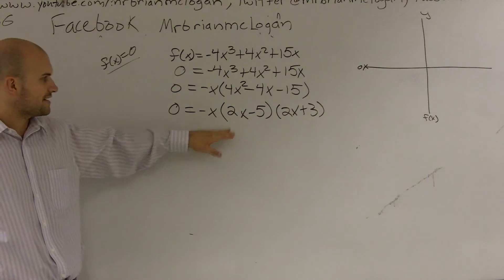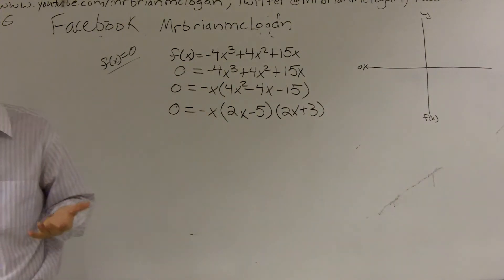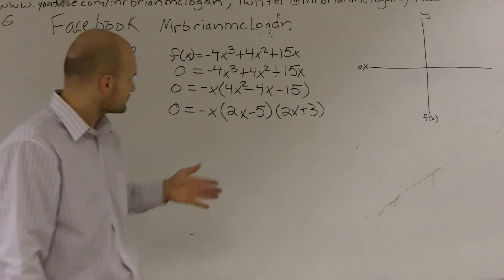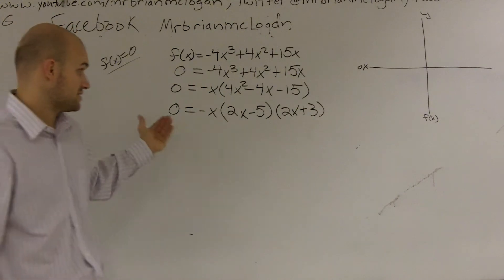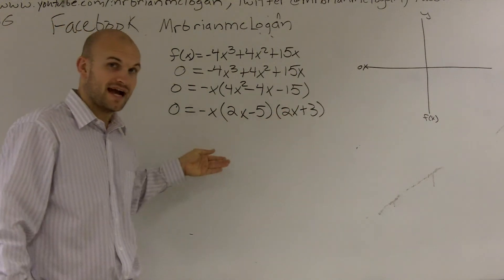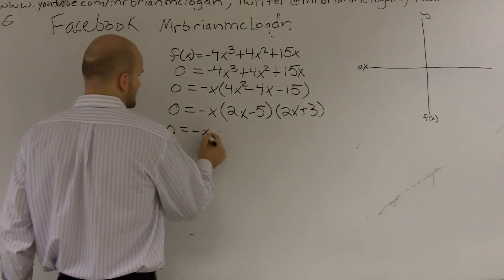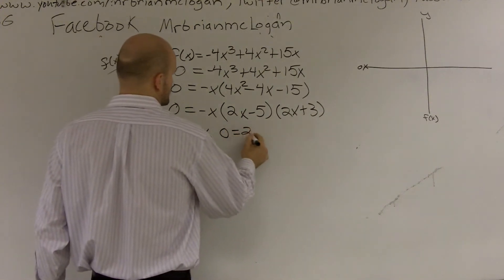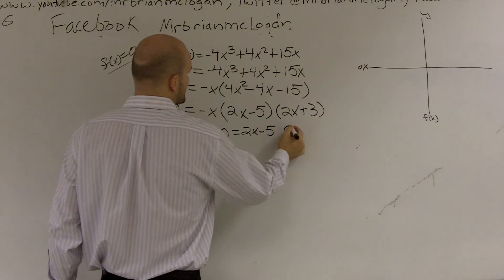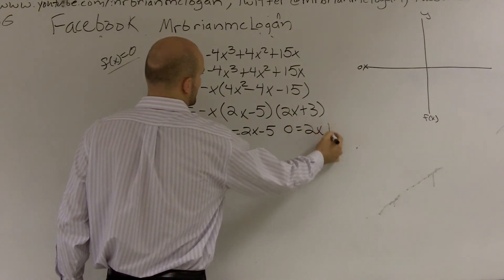So now that I have my factors looking like this, the next thing I'm going to want to do is I need to find exactly what the zeros are. So here's the list of the factors. I need to write them as zeros. So I say zero equals negative x, zero equals 2x minus 5, and zero equals 2x plus 3.